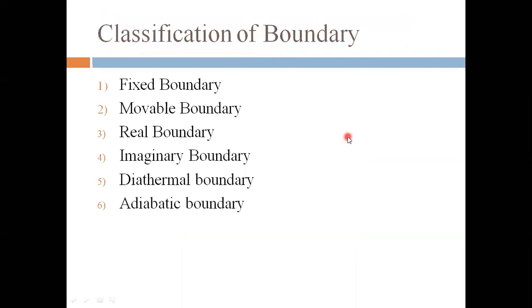Now we move on to the classification of the boundary. There are six types of boundary: first is a fixed boundary, second is a movable boundary, third is a real boundary, fourth is an imaginary boundary, fifth is a diathermal boundary, and sixth is an adiabatic boundary.